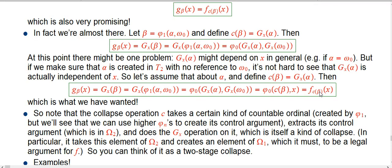It does two things. It extracts its control argument, which is an omega 2. That's what we've been calling alpha here. And then does the gx operation on that sucker, which itself is a kind of collapse in terms of taking more complicated ordinals, in terms of what omega high level of hierarchy it is, and takes it down.